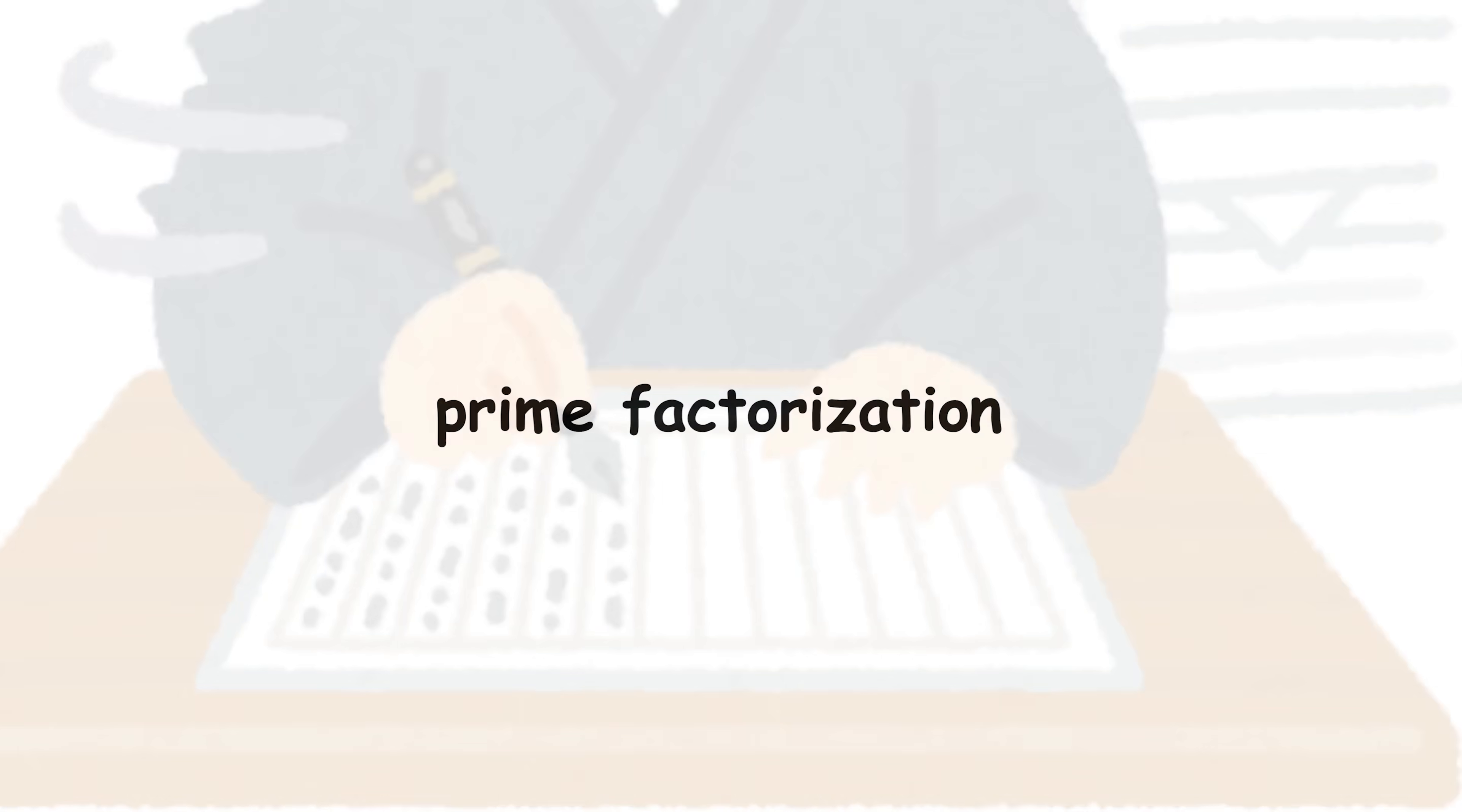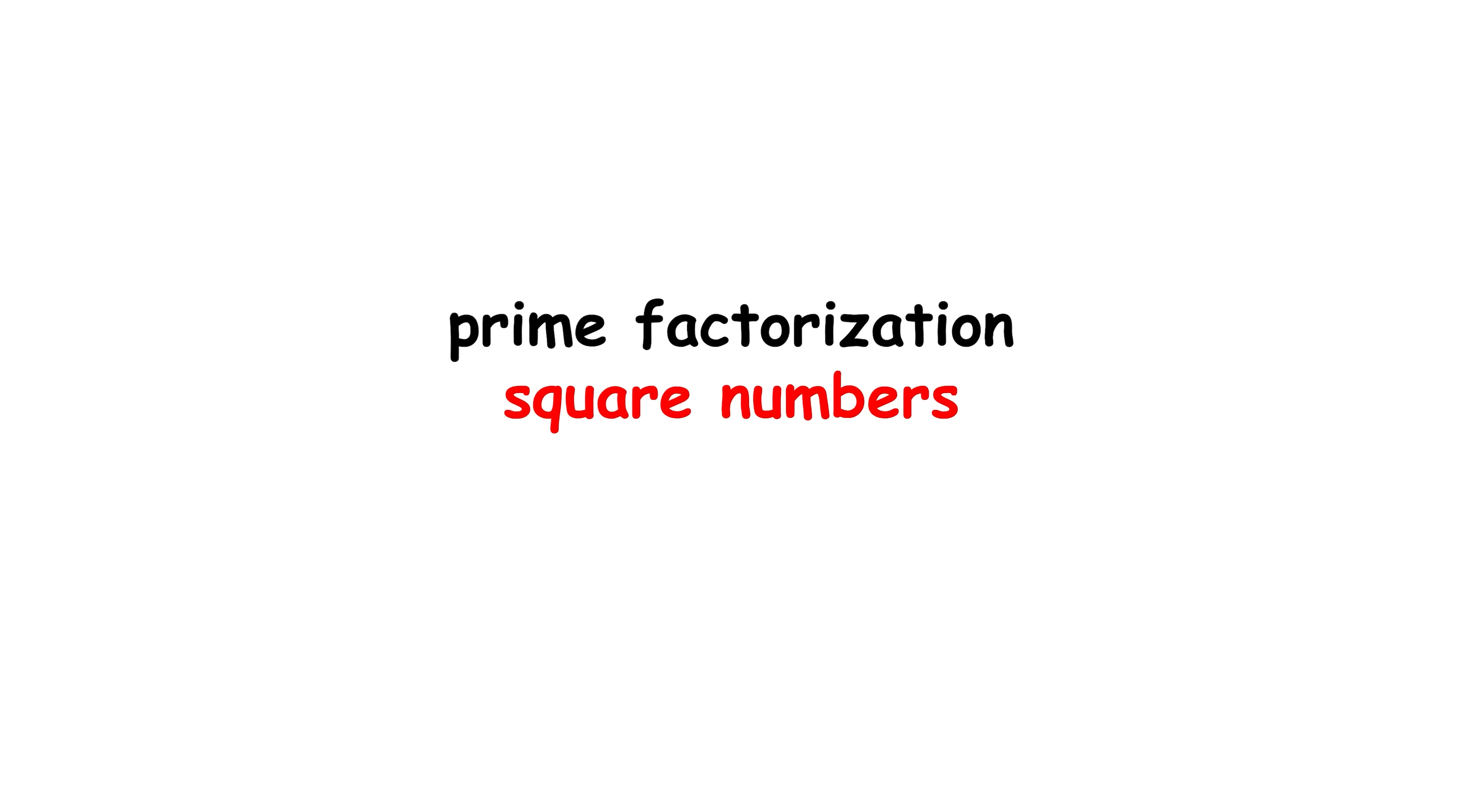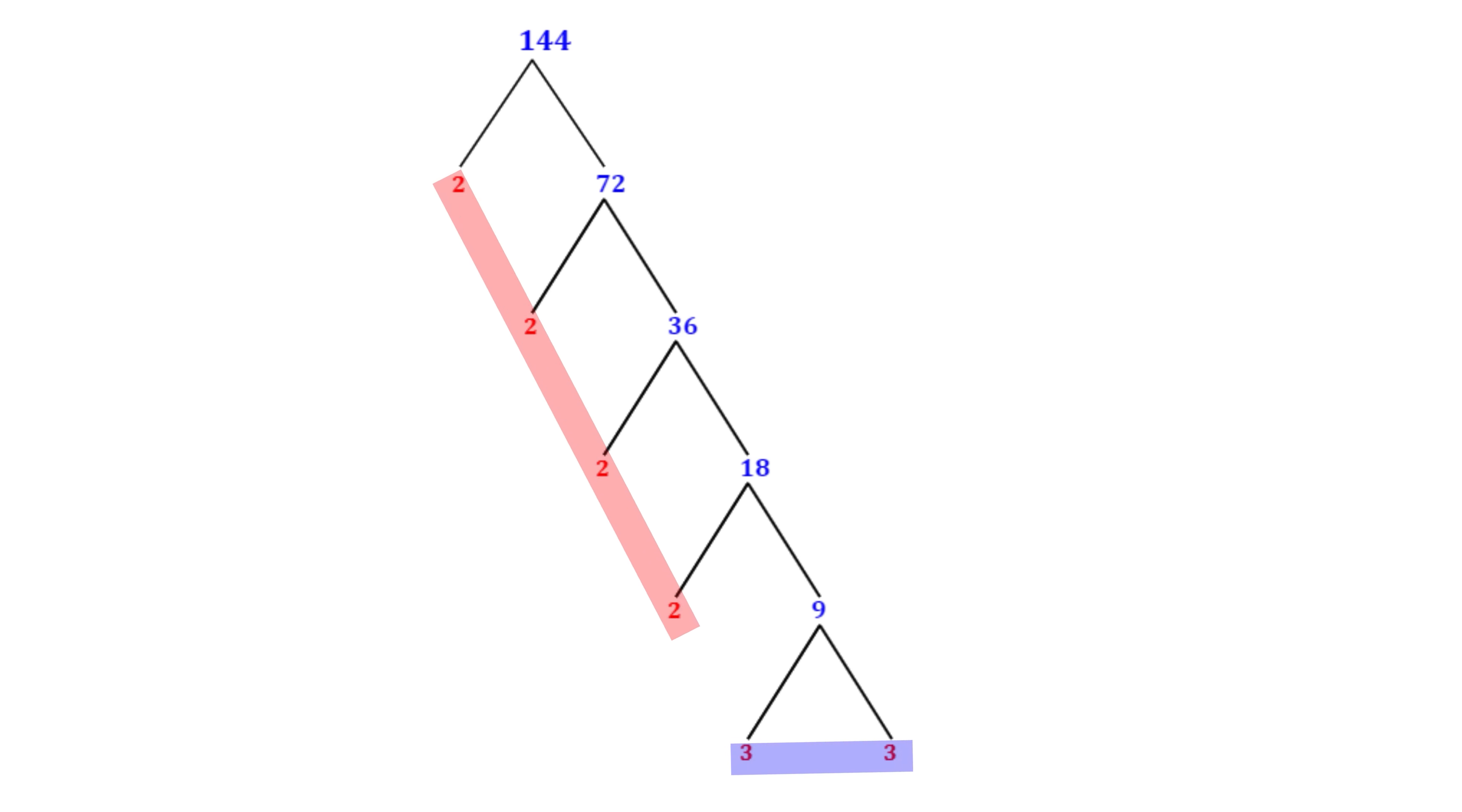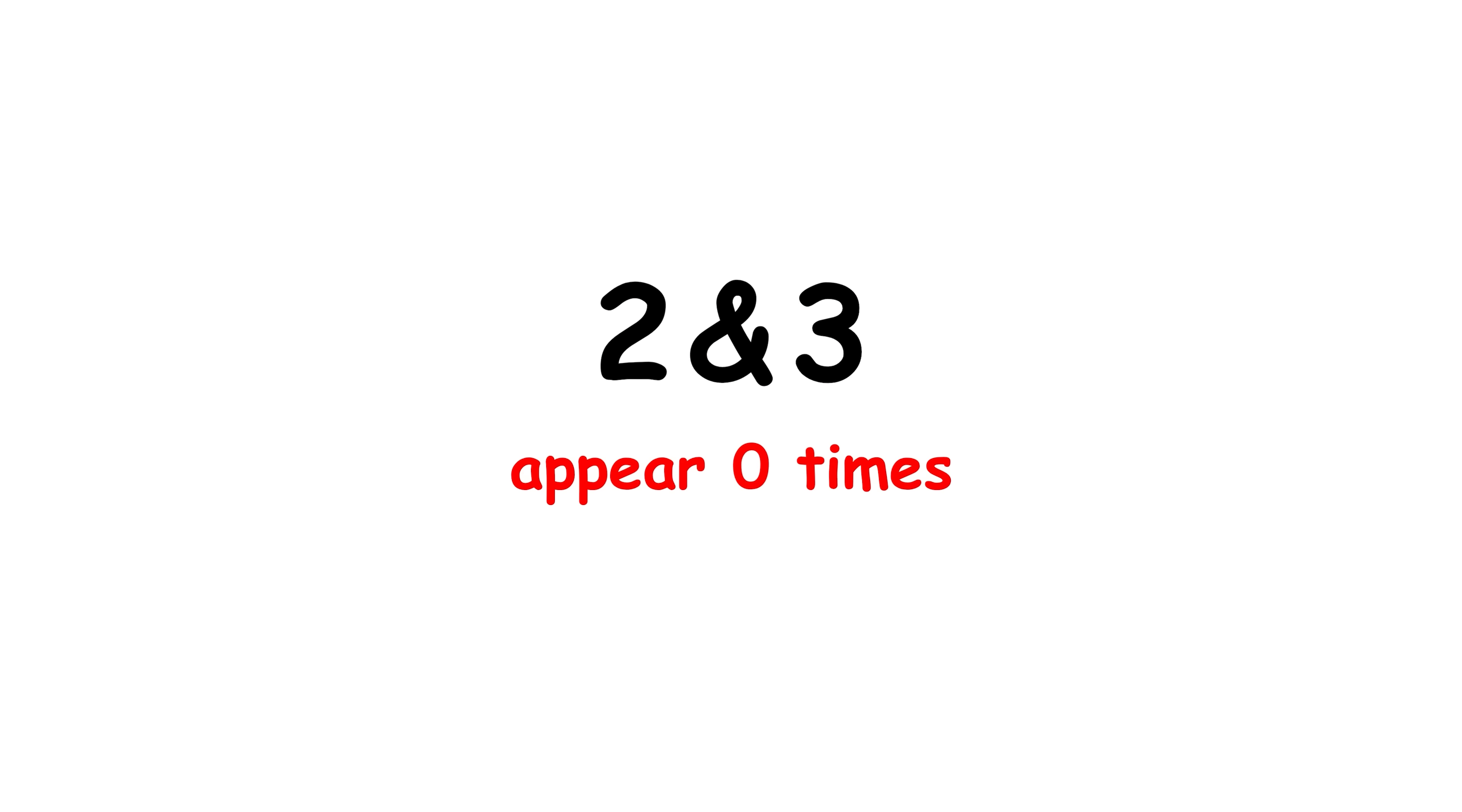In particular, let's focus on the prime factorization of square numbers. An example is 12 squared, or 144, whose prime factorization contains 4 2s and 2 3s. Notice that each prime number appears an even number of times in the factorization. This even applies to all of the prime numbers other than 2 and 3, because those primes appear 0 times, and 0 is an even number.